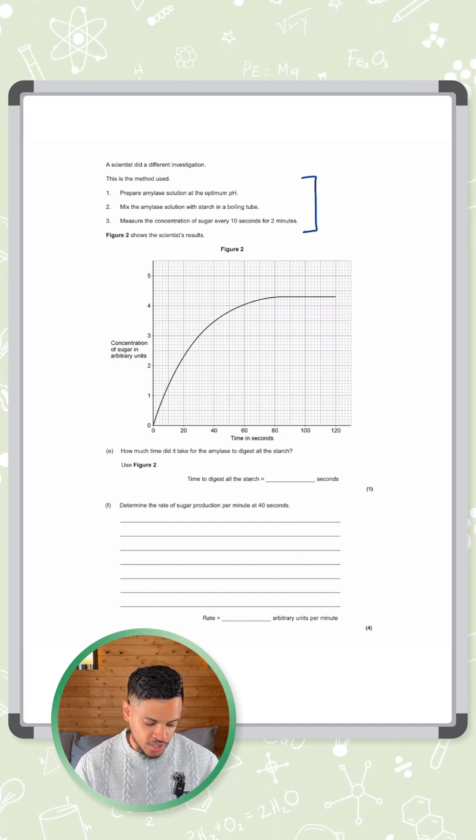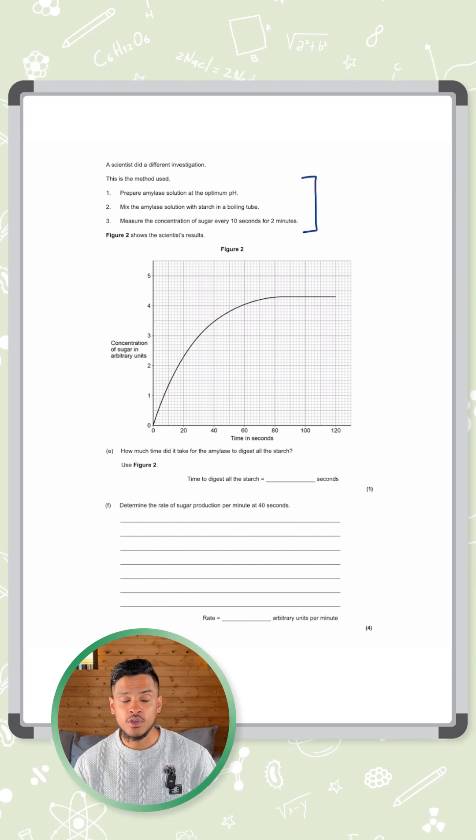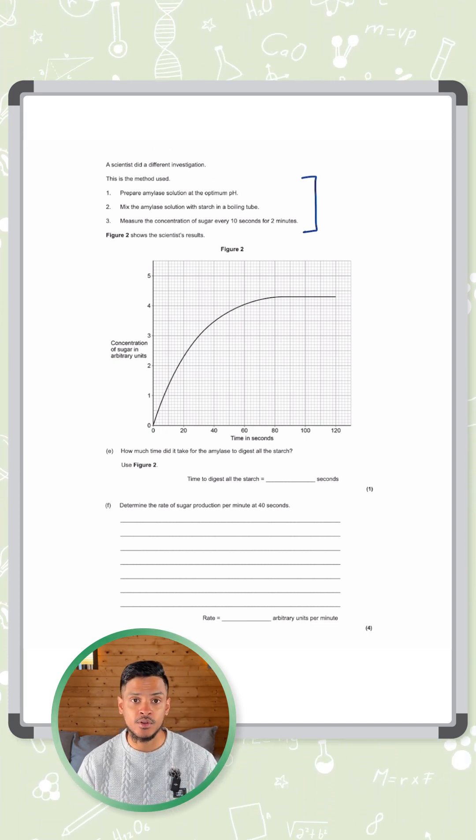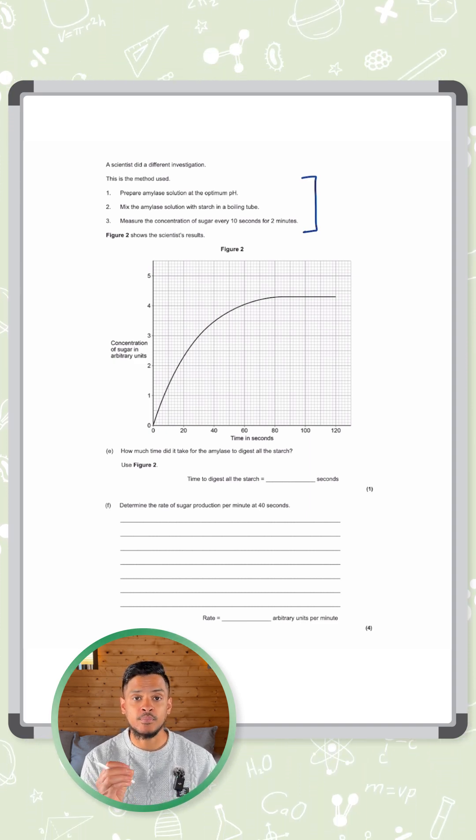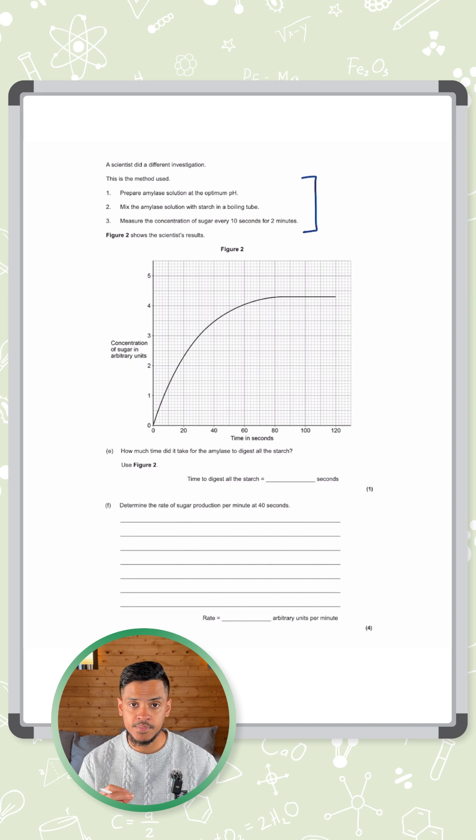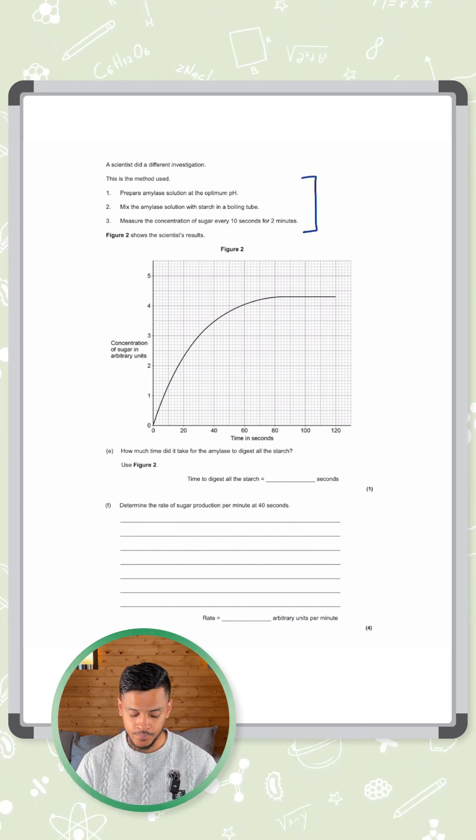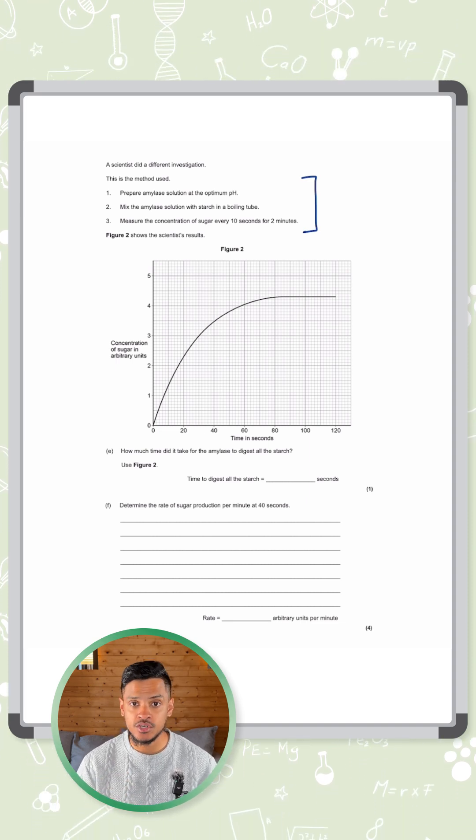Step 3, they measured the concentration of sugar every 10 seconds for 2 minutes. So the way we're usually taught this required practical is we don't measure the sugar, we measure the starch. We use iodine solution and the point at which starch stops being present, we say that the amylase has broken it down. This is the other way around. We're measuring how much sugar is present.